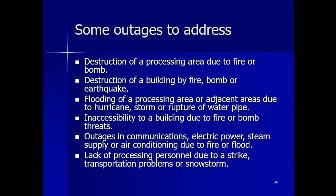Some outages that should be addressed include: destruction of a processing area due to a fire or bomb; destruction of a building by fire, bomb, or earthquake; flooding of a processing area due to hurricane, storm, or rupture of a water pipe; inaccessibility to a building due to a fire or bomb threat; outages in communication, electric power, steam, supply, or air conditioning due to fire or flood; and lack of processing personnel due to a strike, transportation problems, or a snowstorm. These are specific events which may impact operations and cause disruption beyond the recovery time objective.